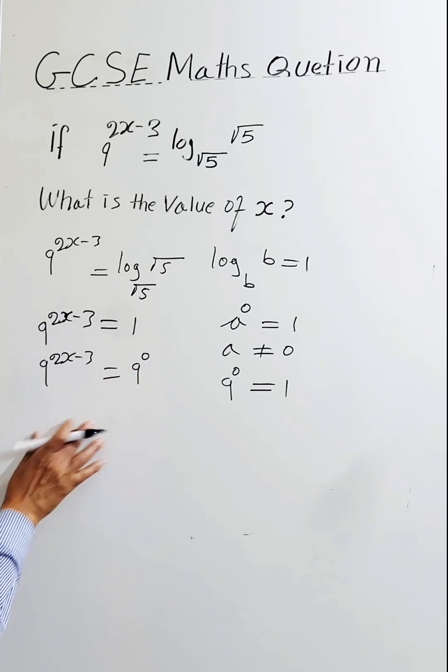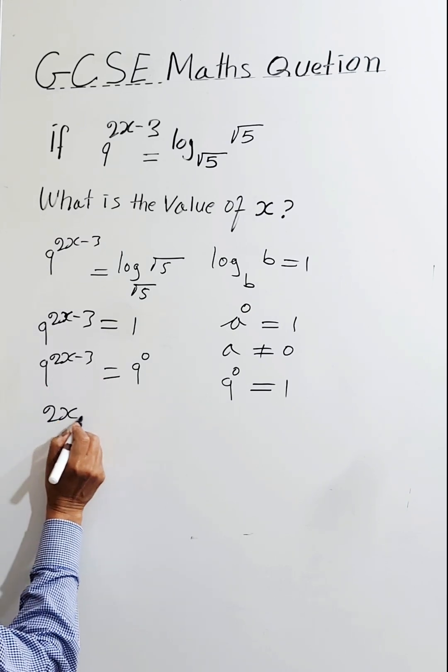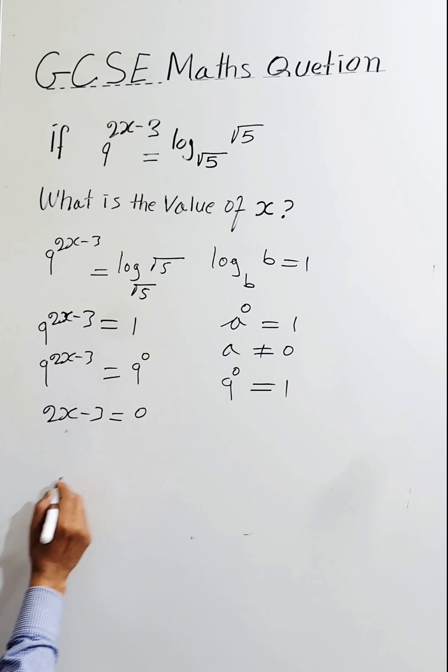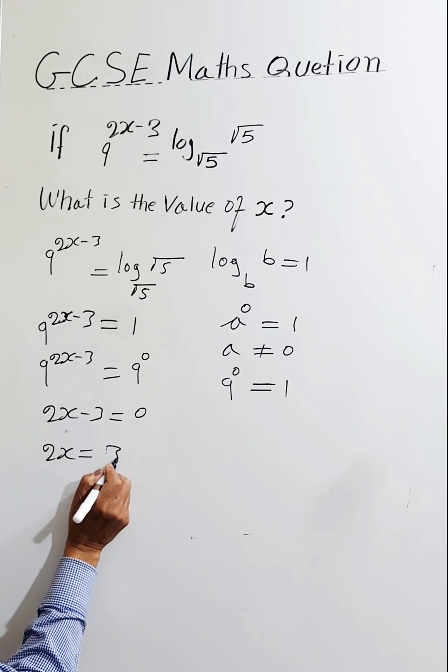And if the base is the same, we can equal the power. So 9 to the power of 2x minus 3 equals 9 to the power of 0. So 2x minus 3 equals 0, which means 2x equals 3.